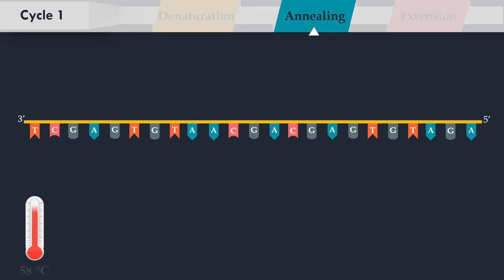In the next step, the reaction temperature is lowered to 58 degrees Celsius, allowing annealing of the forward primer to its complementary part of the single-stranded DNA template. The annealing temperature relies directly on length and composition of the primers.